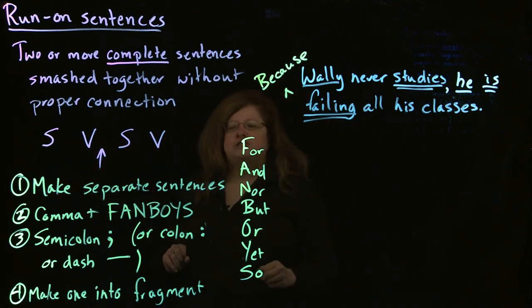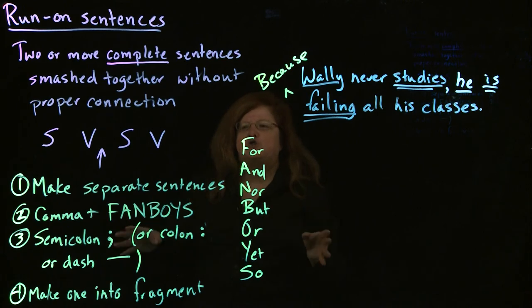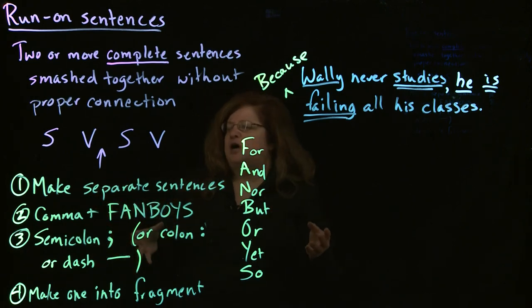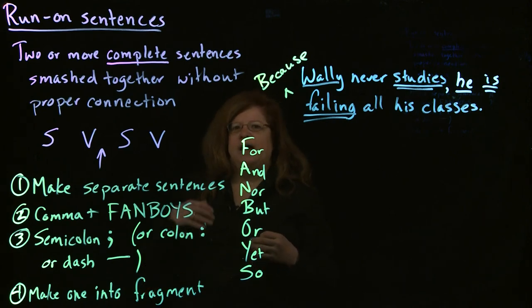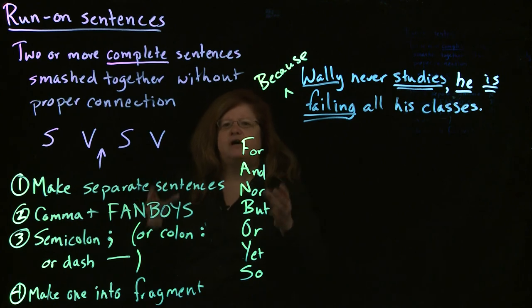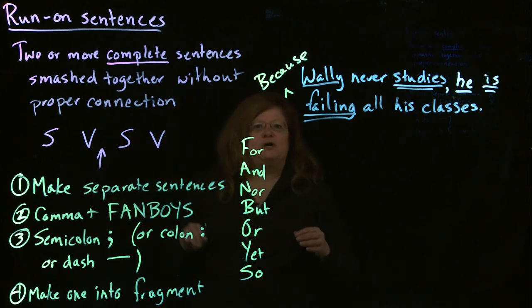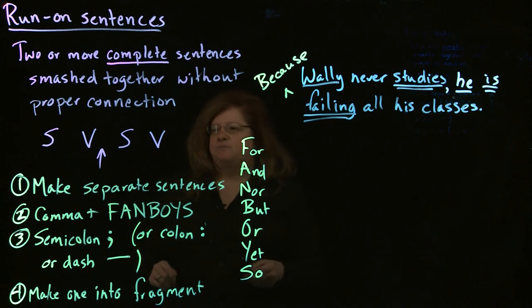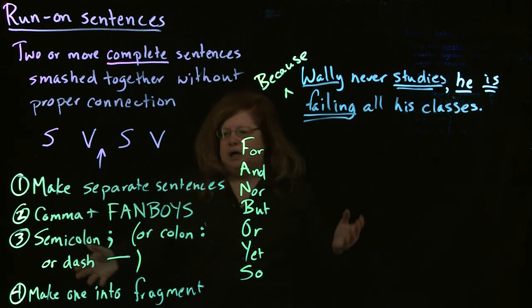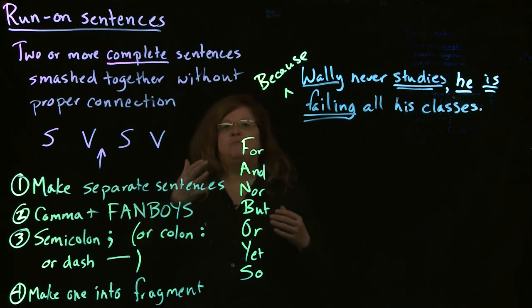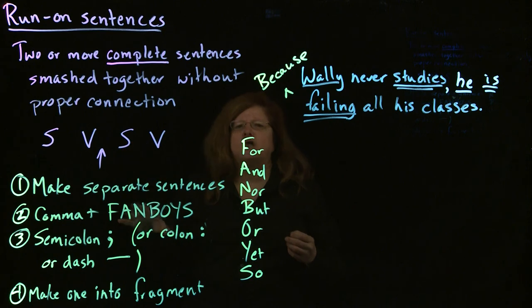There is no one single right answer when fixing run-on sentences, and I would recommend not always fixing them the same way. If you always just make separate sentences, you end up with a bunch of tedious little short sentences that are boring and sometimes annoying for the reader — it's like riding with a teenager who's learning to drive. So don't always use the same method: some places make separate sentences, other places give the comma a FANBOY, other places put in a dependent word. Mix and match, so you end up with writing that has no run-on sentences and is also interesting to read.